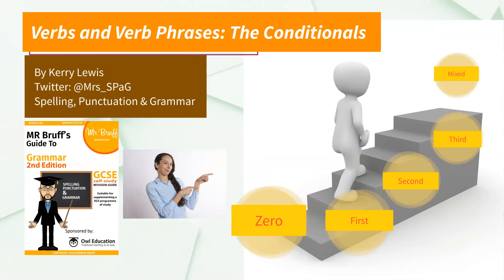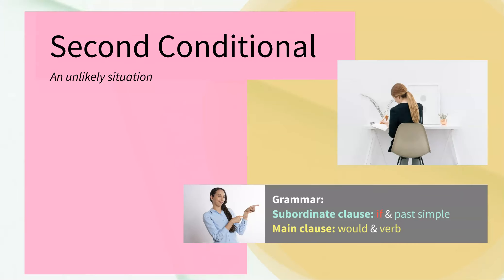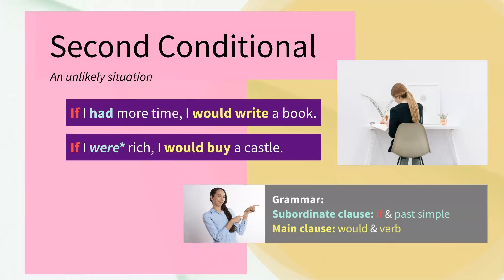We're now moving towards things that are becoming less and less likely. The second conditional describes an unlikely situation. 'If I had more time, I would write a book.' Well, it's possible that you might have more time, but it's highly unlikely that you will write a book. 'If I were rich, I would buy a castle.' Well, you might be rich already, but if you're not, you'd probably be very lucky to win the lottery — in which case you might consider buying a castle — but it's highly unlikely.